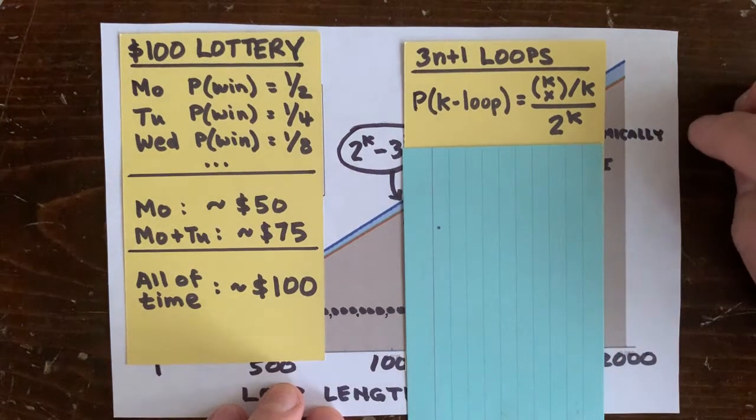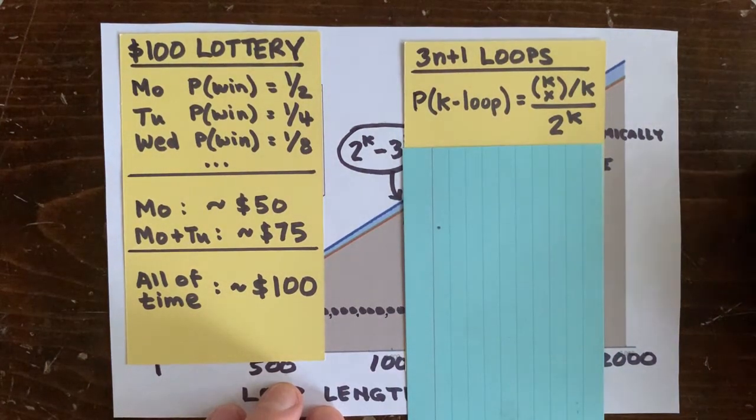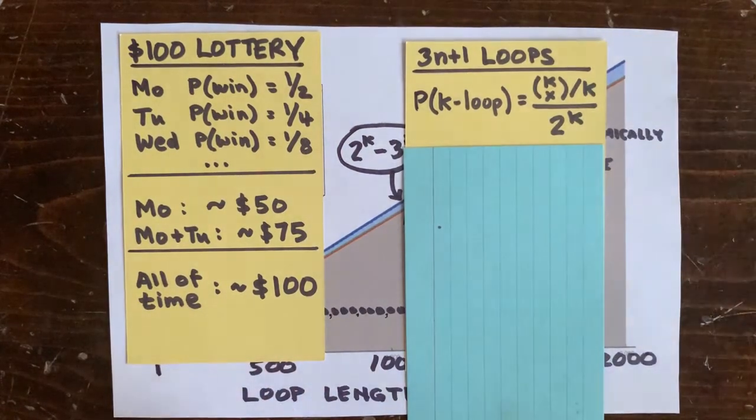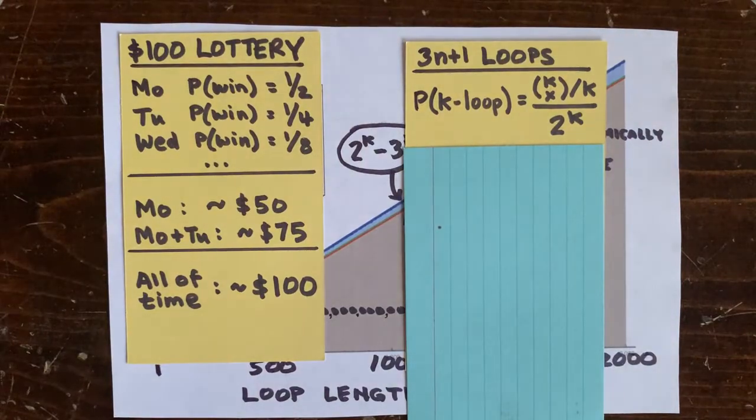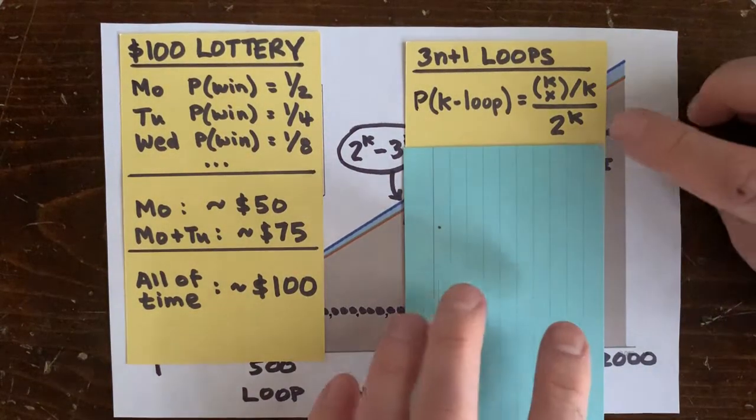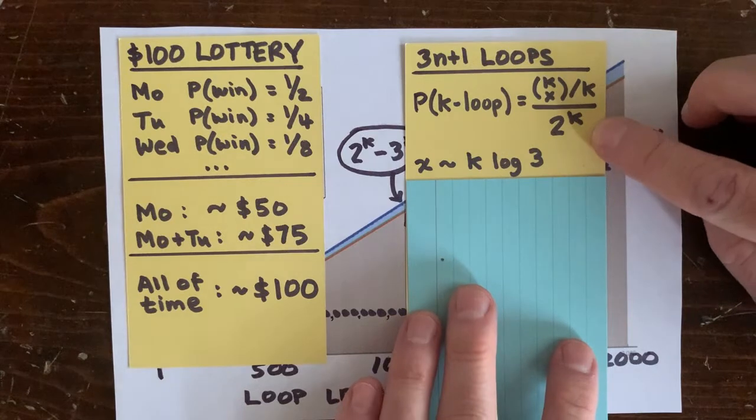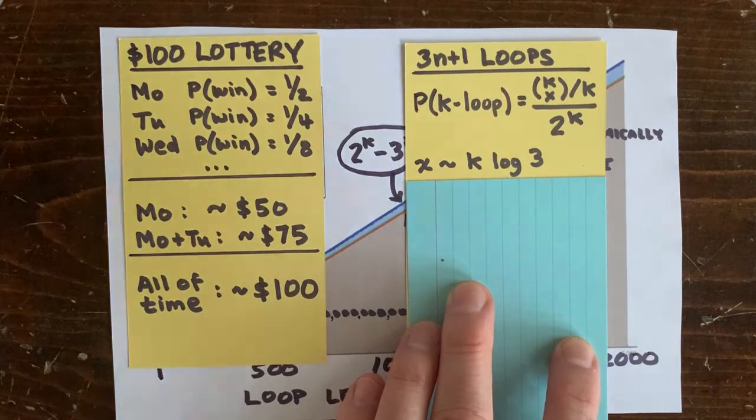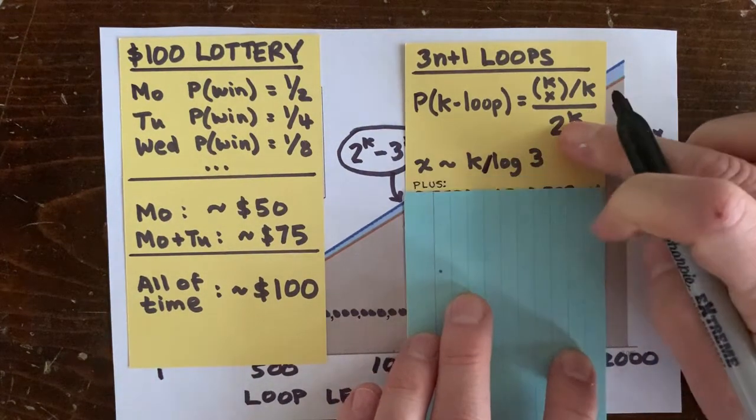Well assume we get k choose x over k shots at the divisibility target. And also assume pessimistically that 2 to the k minus 3 to the x is basically 2 to the k. That those two numbers stop being close to each other. Finally, let's pick x to be 63% of k or really the ceiling of k over log 3. Next, we use Sterling's approximation for k choose x over k.